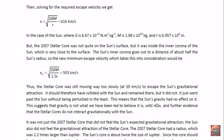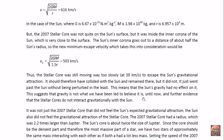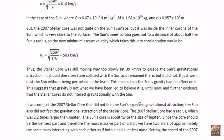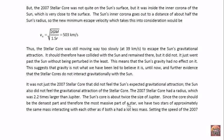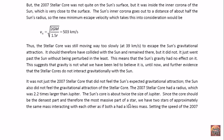It was obviously moving way too slowly to escape the sun's gravitational attraction. So it should therefore have collided with the sun and remained there. But it did not. It just went past the sun without being perturbed in the least. This means that the sun's gravity had no effect on it. This suggests that gravity is not what we have been led to believe it is until now. And further evidence that the stellar cores do not interact gravitationally with the sun. It was not just the 2007 stellar core that did not feel the sun's expected gravitational attraction. The sun also did not feel the gravitational attraction of the stellar core.